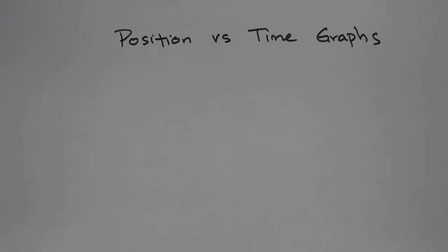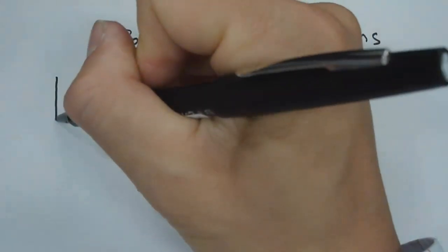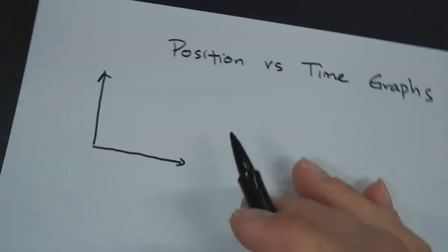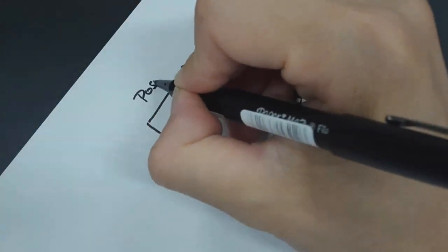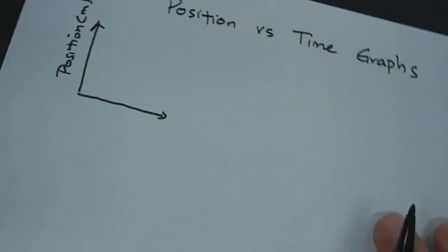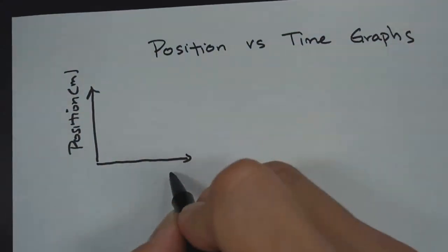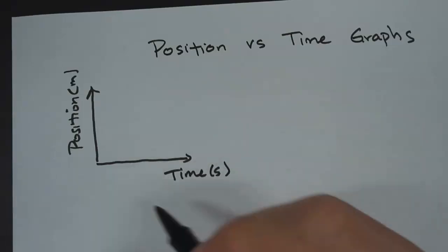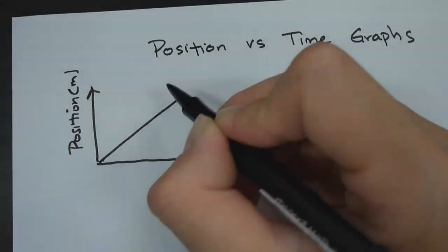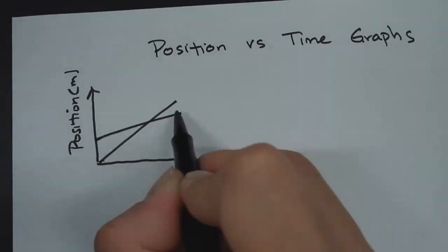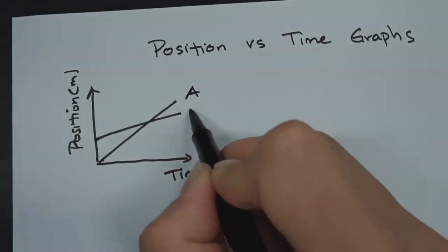In this video, we're going to be looking at position versus time graphs. On position versus time graphs, on the y-axis we have position — it could be in meters or centimeters. On the x-axis, we have time. Now I'm going to draw the motion of two objects. We'll call one object A, and we'll call this object B.